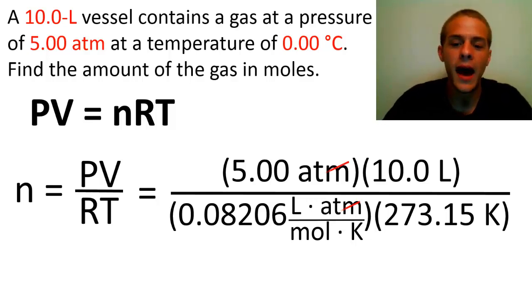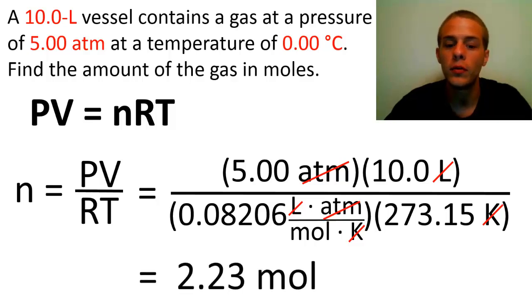So then we're going to go ahead and cancel our units. The atmospheres are going to cancel. The liters are also going to cancel. The Kelvin are going to cancel. And notice that the only unit that hasn't canceled is the moles. That's the unit that we want because that's what we're trying to figure out. So we're going to carry out this mathematical operation in our calculator. Just multiply the top two terms and divide by the product of the bottom two terms. We're going to keep it to three sig figs. And our final answer is going to be 2.23 moles. So we just figured out the amount of this gas in this 10.0 liter, 5.00 atmospheres, 0.00 degrees Celsius container. So I hope this video was helpful to you a little bit.